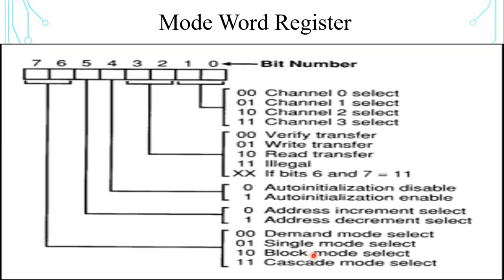The mode register — every channel has its own mode register. It is used to program the following features of the 8237: read, write, or verify transfer content; demand, single, or block data transfer; single DMA operation or cascaded operation; and enable or disable auto-initialization. The control word format of the mode register is shown here.